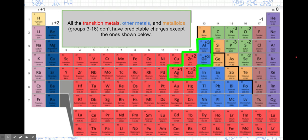the bulk of the metals, the transition metals and the other metals, as well as the metalloids, don't have predictable charges. And that's because they have kind of a weird deal with their valence electrons and electrons falling to lower levels.